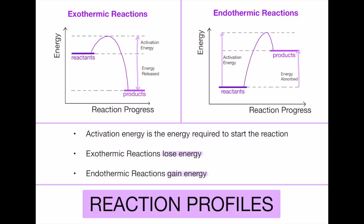Another thing you need to know about are reaction profiles within exothermic and endothermic reactions. This is simply an energy graph that shows how the energy changes throughout the reaction. In exothermic reactions, the reactants have a high energy level at the start, but because energy is released, the products end up at a much lower energy. In endothermic reactions, the reactants have a low energy at the start, and because energy is absorbed, the products have a higher energy than the reactants.